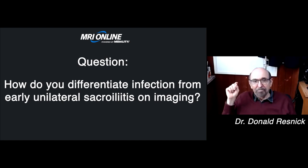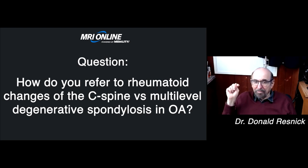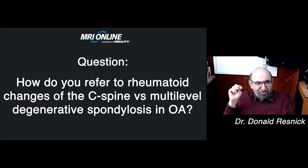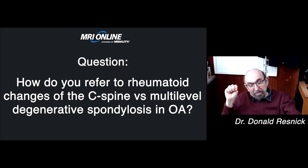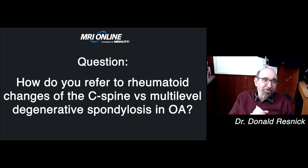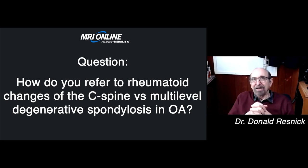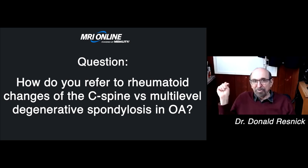How do you differentiate rheumatoid changes of the C-spine versus multi-level degenerative spondylitis and OA? I'd love to tell you we have rules for 100% accuracy in all these differential diagnoses, but I certainly have cases where I struggle. I can struggle with patients who have rheumatoid involvement of the cervical spine that looks like degenerative disc disease. But one interesting feature I look for is that some patients who have rheumatoid with discovertebral erosions — beginning at the joints of Luschka, extending across the disc — will not have prominent osteophytes. If I see extensive discovertebral erosion without osteophytes, I always think of rheumatoid arthritis as a possibility.